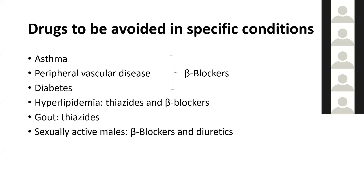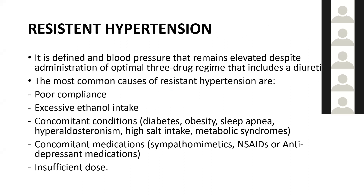Resistant hypertension is defined as blood pressure that remains elevated despite an optimal three-drug regimen that includes a diuretic. Common causes include poor compliance, excess alcohol intake, concomitant conditions such as diabetes, obesity, sleep apnea, hyperaldosteronism, high salt intake, or metabolic syndrome, as well as concomitant medications such as sympathomimetics, NSAIDs, and antidepressants, or insufficient dosing of medication.